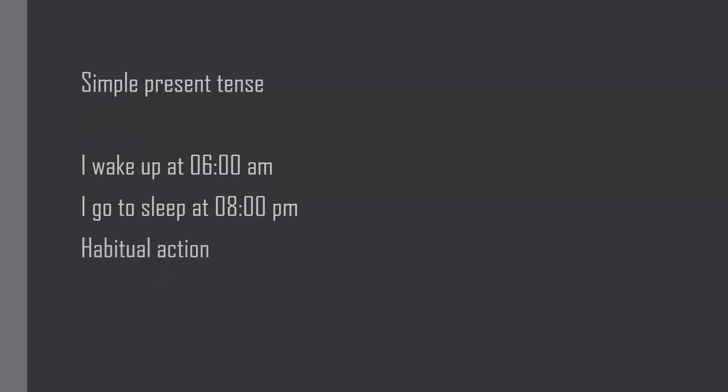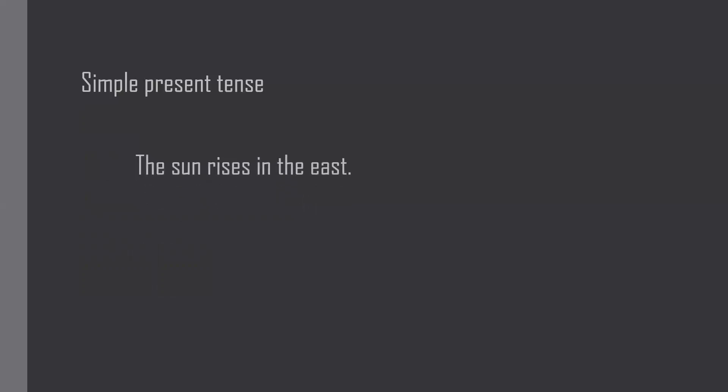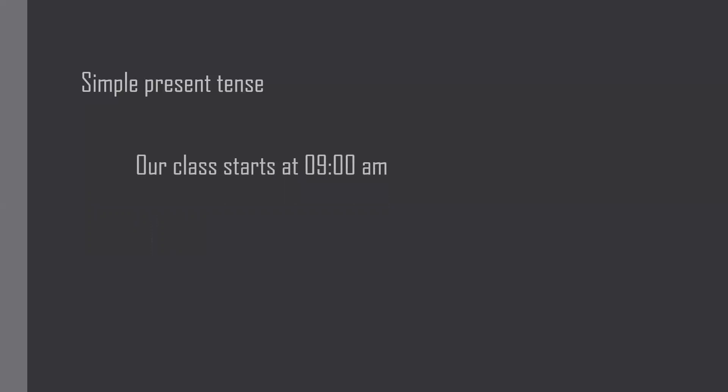Another use: 'The sun rises in the east.' Whether you are in India, Antarctica, or the Arctic region, you can say the same sentence — the sun rises in the east. This is a general truth, applicable to all people in the world. So when you want to express a general truth, you also use simple present tense.